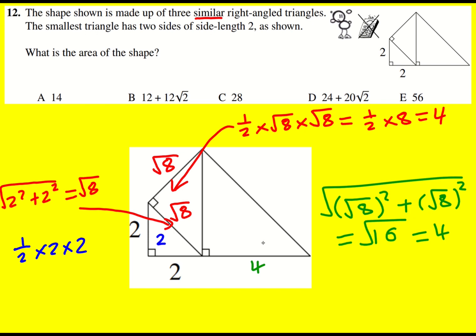So I've got 4 here because it's a similar triangle and 4 here. Then I'm going to get a half times 4 times 4 which is equal to 8.